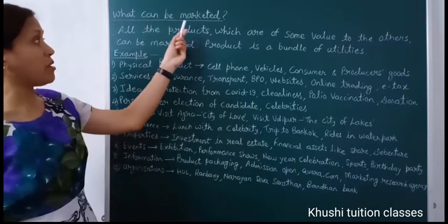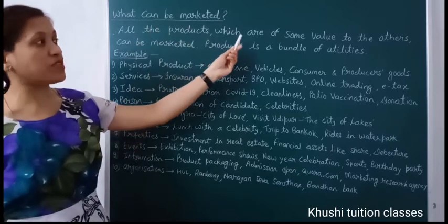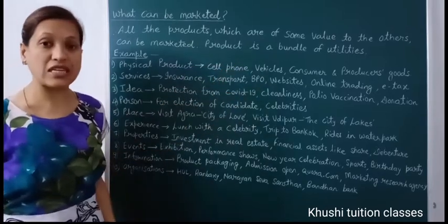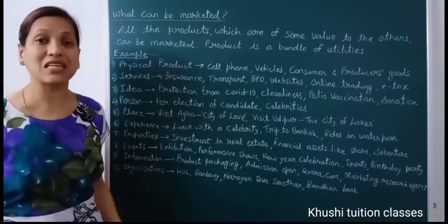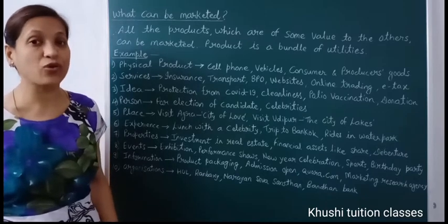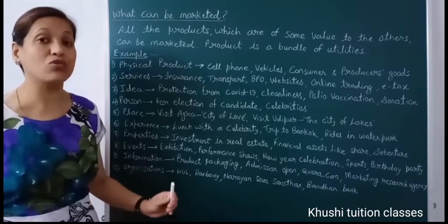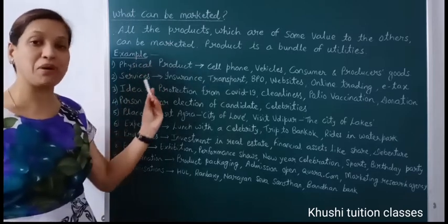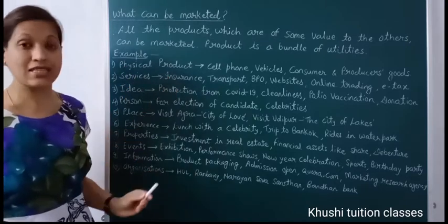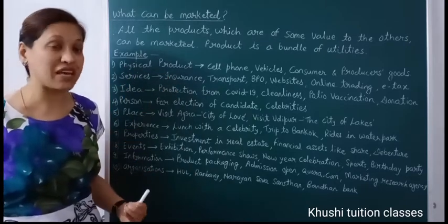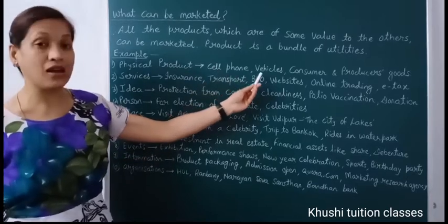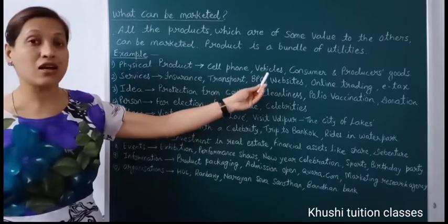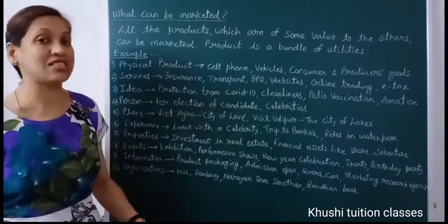Now we learn what can be marketed. All the products which have some value to others can be marketed. A product is a bundle of utilities — every product that satisfies a person's need and want can be marketed. The first is physical products, i.e., tangible products that we can see, such as cell phone, vehicle, dress, specs, books, bag. All these are either consumer products or producers' goods such as machinery.